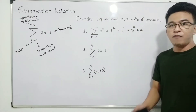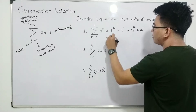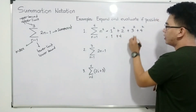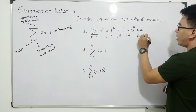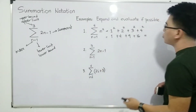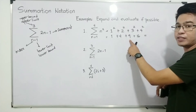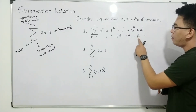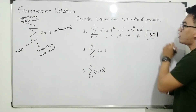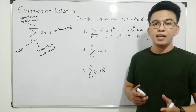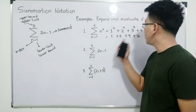Now I will evaluate. By evaluating it, you need to simplify. 1 squared is equal to 1. 2 squared is equal to 4. 3 squared is equal to 9. And your 4 squared is 16. All in all, when we evaluate the summation notation, we have 1 plus 4 which is 5, plus 9 which is 14, plus 16. This will give us the answer of 30. So the answer for the first example is 30.